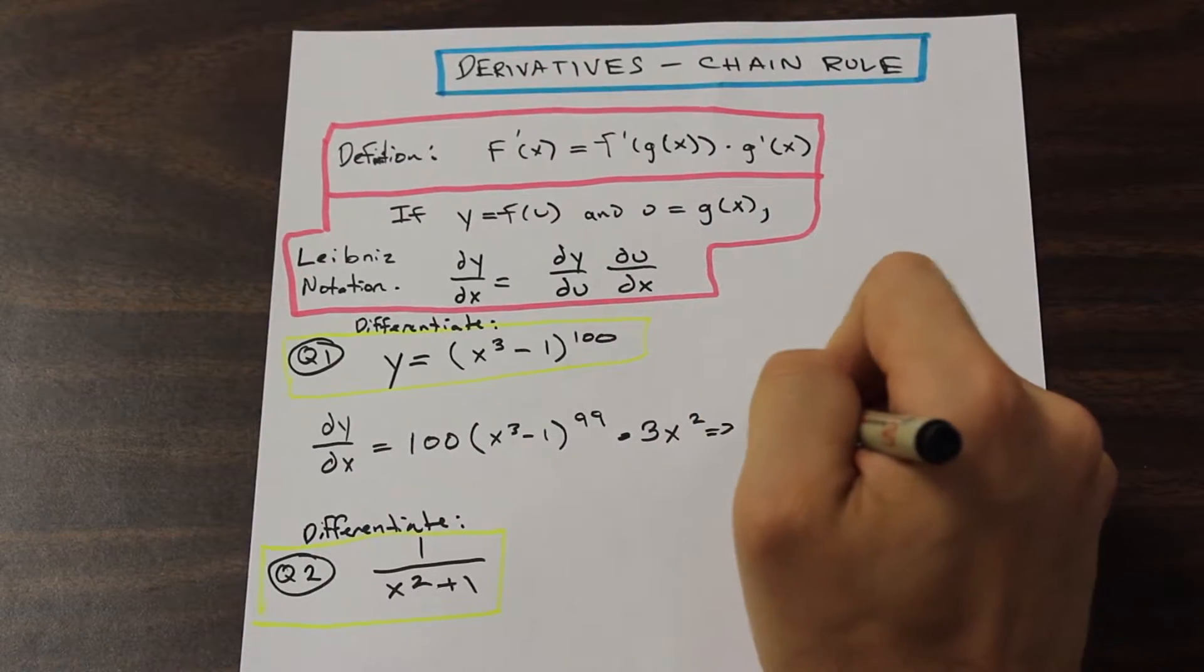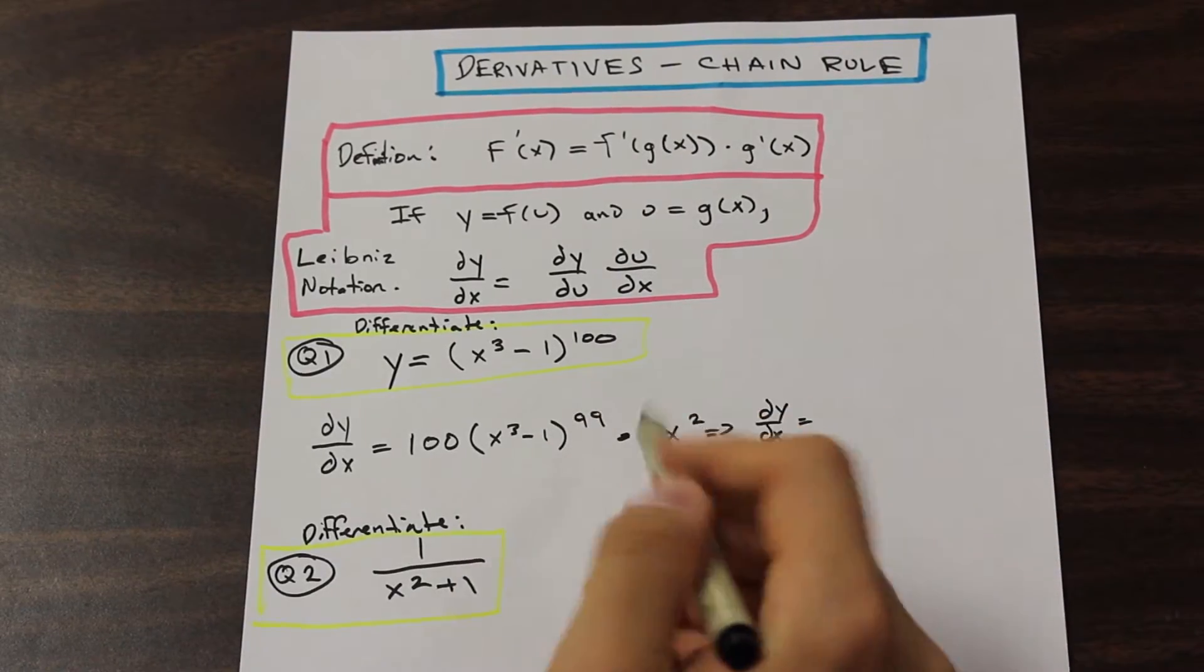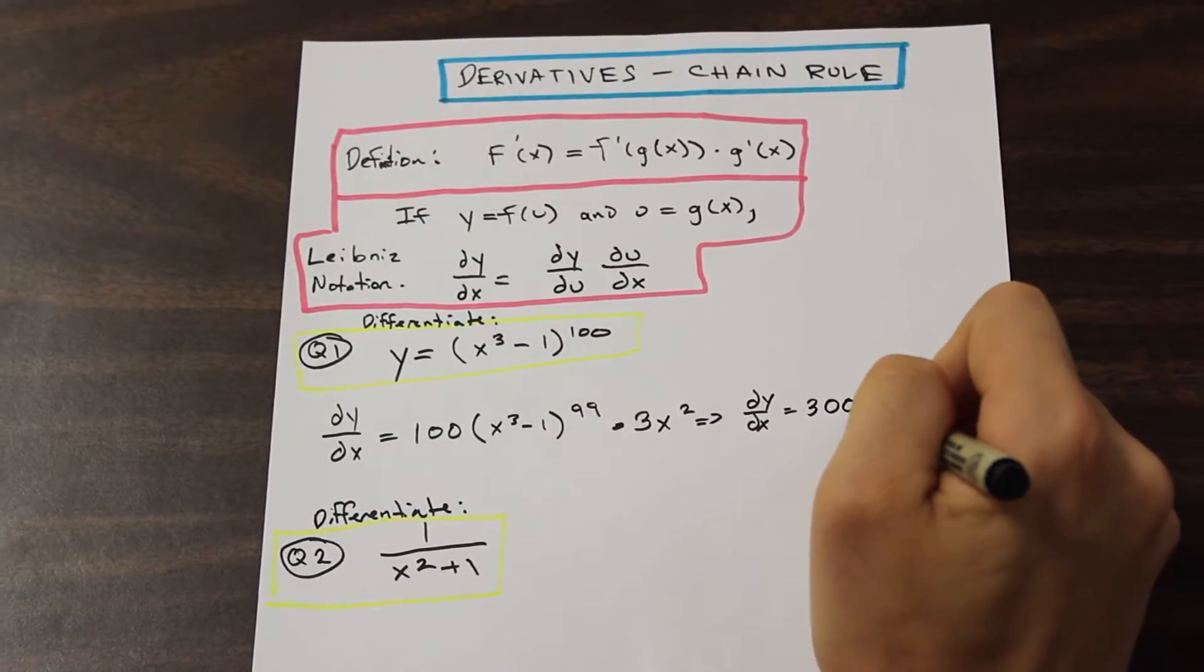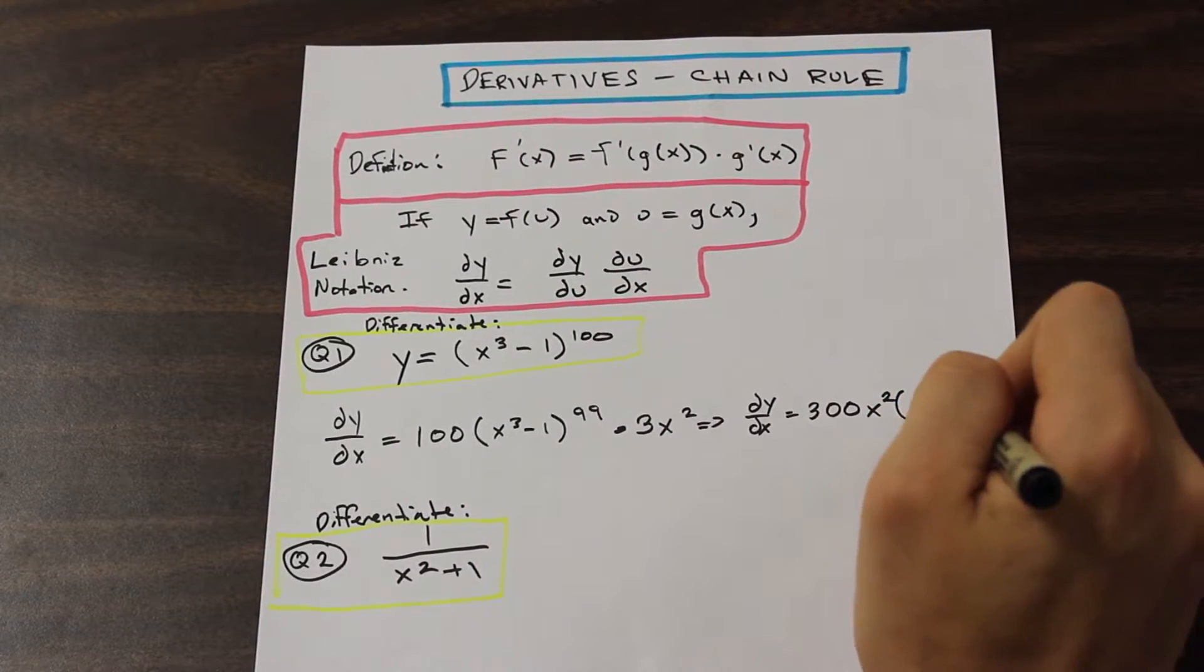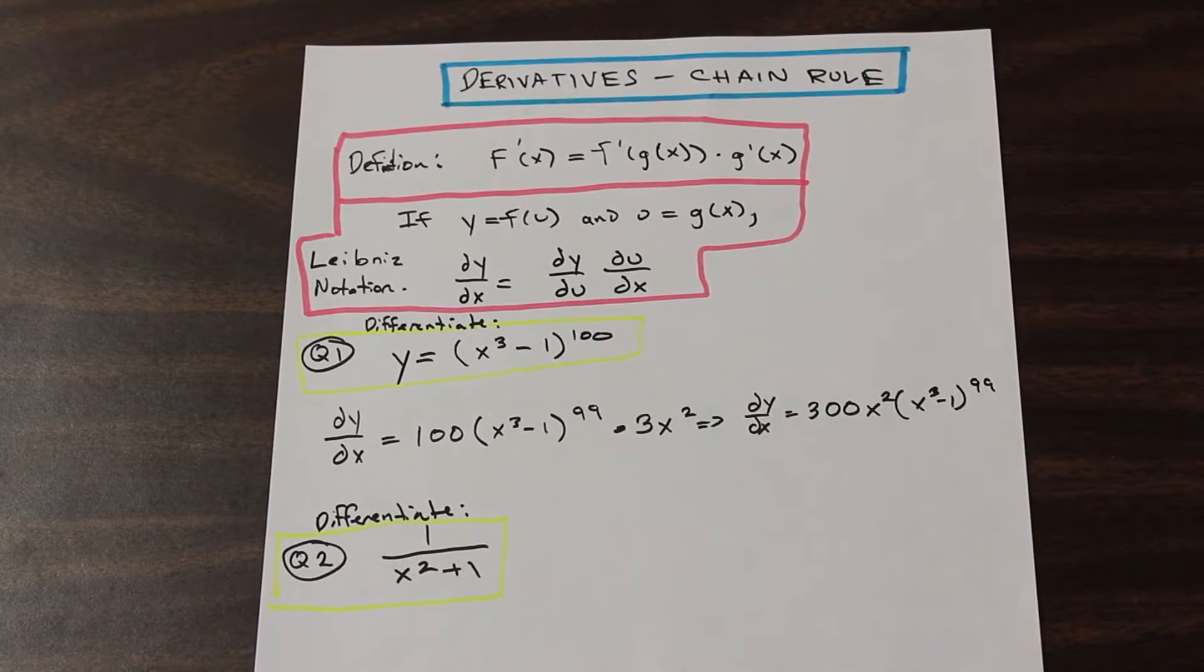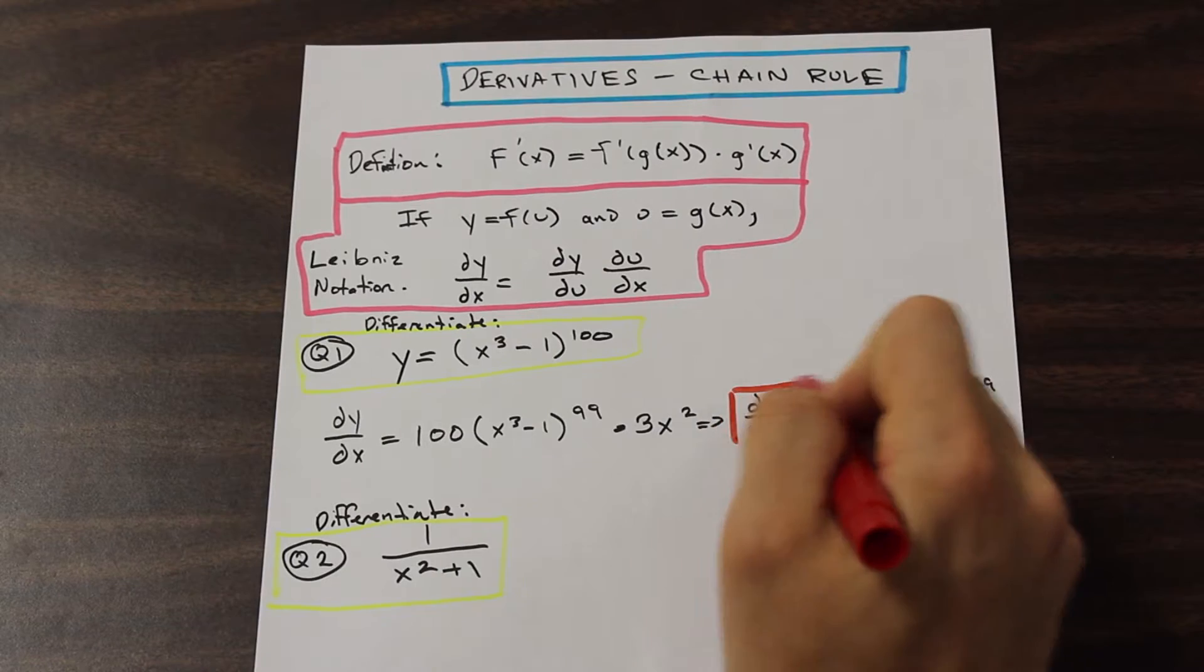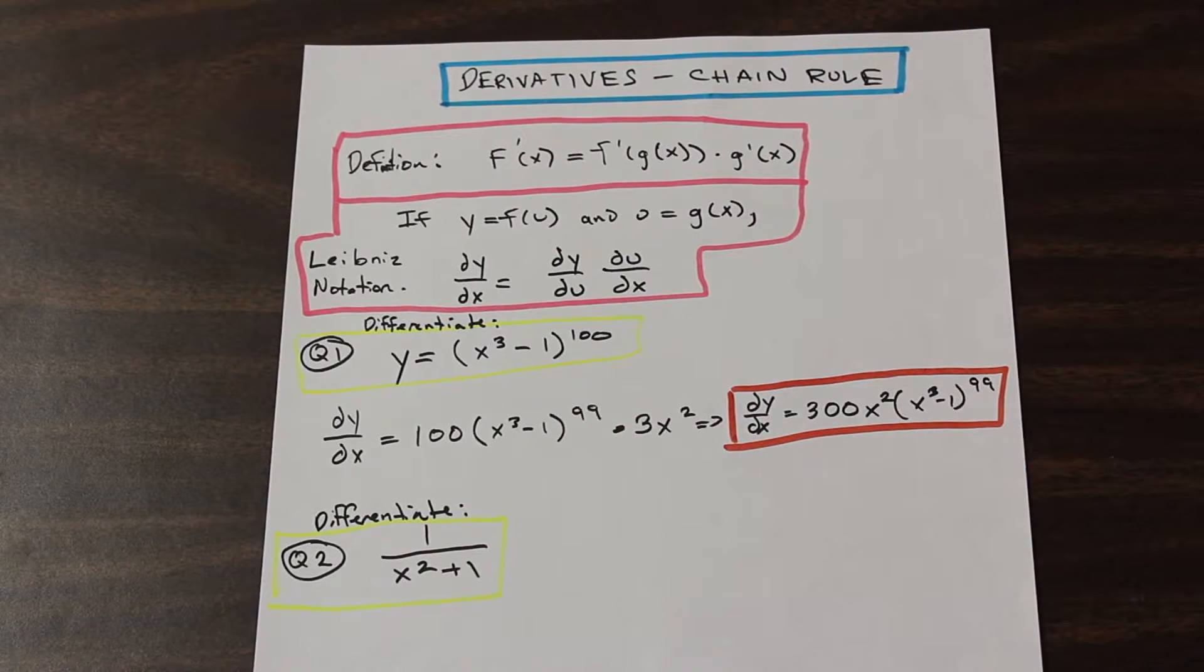If we come over here, we have DY by DX is equal to, and if we just multiply this in, we have 300X squared times X cubed minus 1 to the 99. So as you can see, the chain rule very much simplifies our task of finding a lot of derivatives that would be seemingly impossible without it.